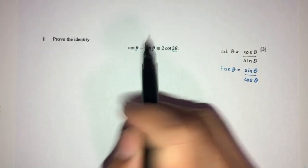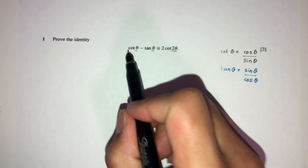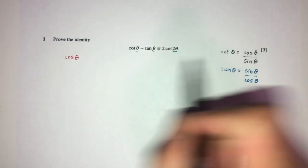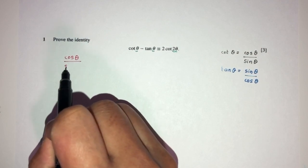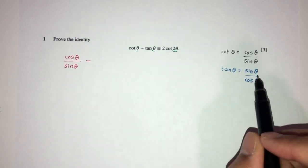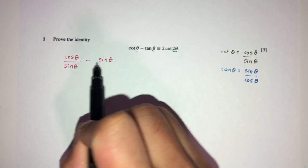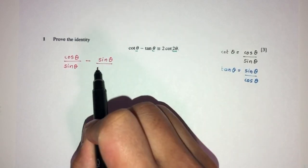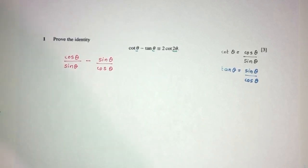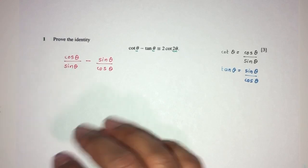So what is cot θ? We understand that cot θ is equal to cos θ divided by sin θ. Fair enough? What is tan θ? So tan θ is equal to sin θ divided by cos θ. That's fair enough, right?